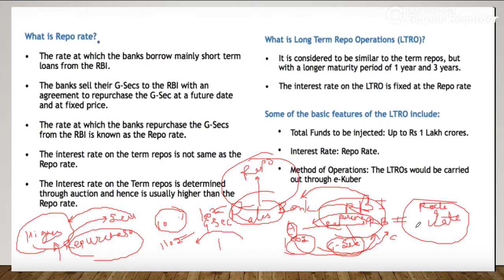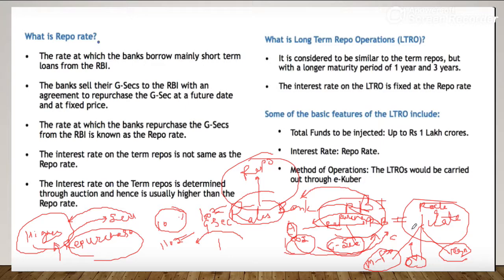Depending upon the maturity period, these repo rates are divided into two parts: overnight repo and term repo. In overnight repo, a bank takes a loan from RBI for just one day. These overnight loans can be applied for Monday through Friday at RBI. The interest rate for these overnight loans is fixed by RBI.